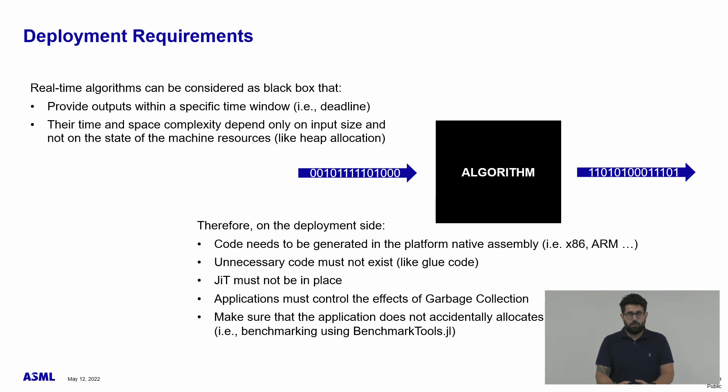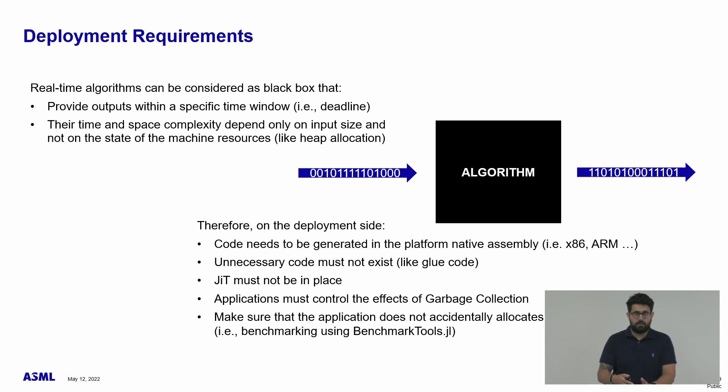Additionally, the memory management behavior needs to be controllable — meaning there should be a strong guarantee that garbage collection doesn't happen when the real-time algorithm is executing. Since Julia uses garbage collection, we need to provide ways to deterministically control its action. On the algorithm implementation side, the developer needs to make sure there is no accidental memory allocation, for instance when allocating matrices inside the algorithm, and also to check with benchmarking tools to ensure no unnecessary heap allocation happens.